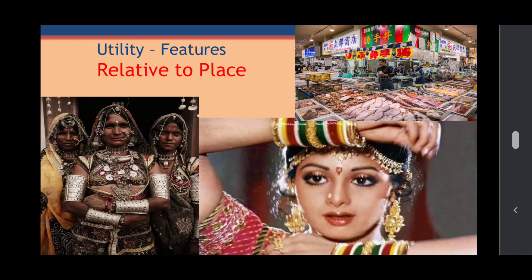Take another example. Japanese people eat fish three times a day and get a lot of satisfaction. Seafood gives them great satisfaction. But eating fish three times a day will not give most Indians a lot of satisfaction. So utility is relative to place — the same commodity does not give equal utility or equal satisfaction at each and every place.